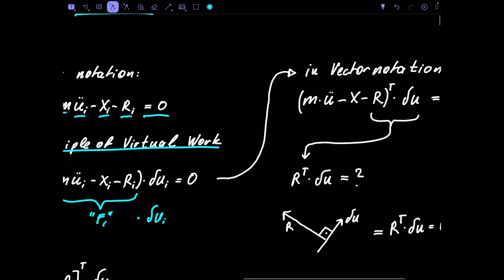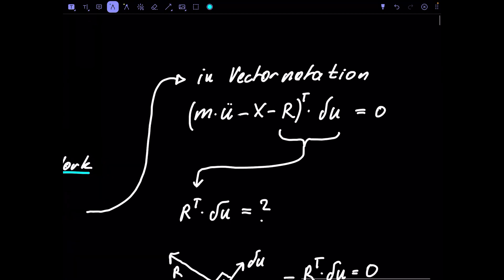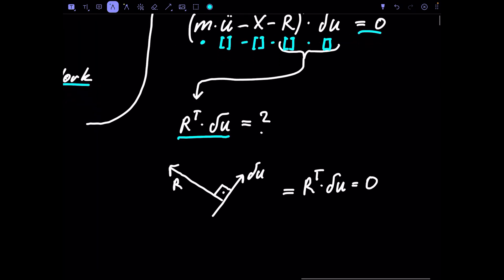In vector notation: mass times u-double-dot, minus applied force, minus reaction force r, transposed and multiplied by the virtual displacements du, equals zero. The possible displacements lie tangent to the configuration space and are orthogonal to the reaction forces, so r-transpose du equals zero. Therefore we can eliminate the reaction forces by projecting our equations of motion into the space of virtual displacements — a very important concept.